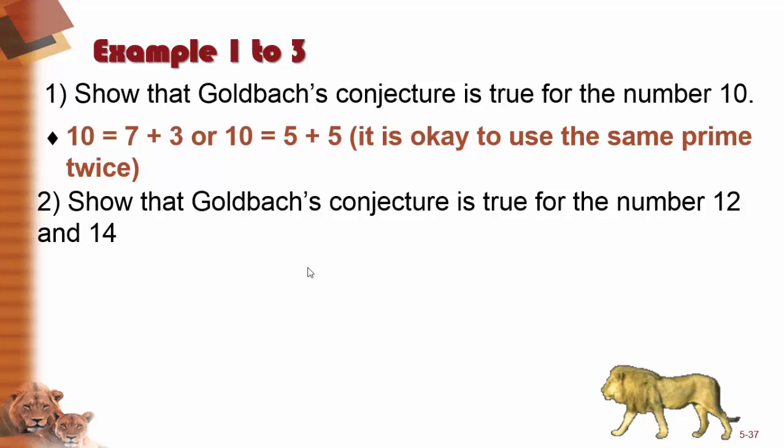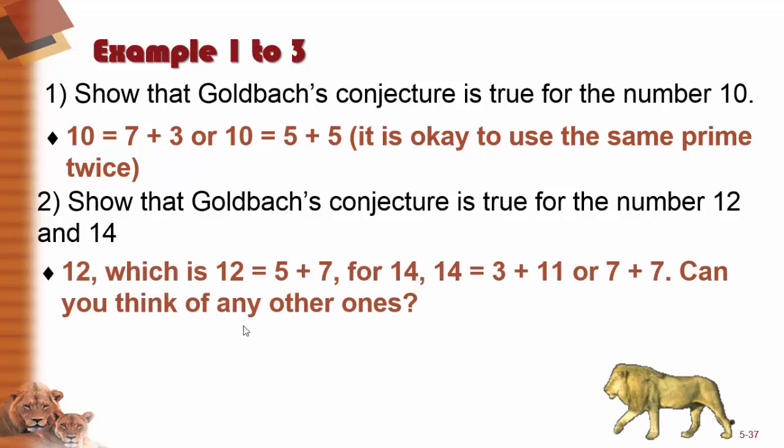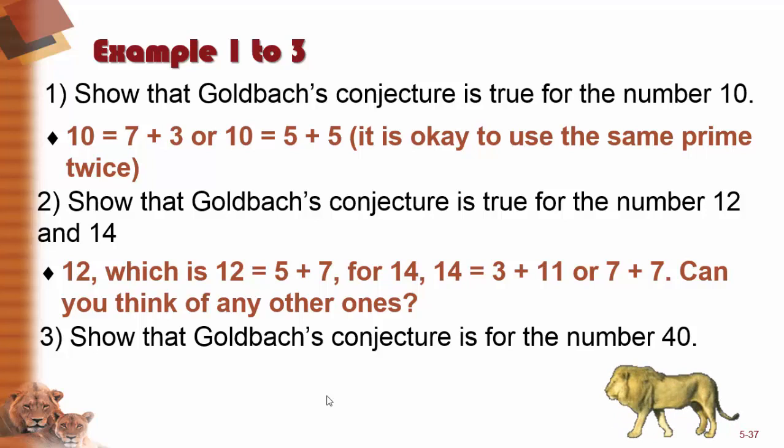In example number 2, we're asked to show that Goldbach's conjecture is true for number 12 and number 14. So for 12, we can say that it's equal to 5 plus 7 because 5 is a prime number and 7 is a prime number and we add those two together and we get 12. For 14, we can add 3 plus 11 and that gives us 14. Both 3 and 11 are prime numbers. Or we can add 7 plus 7 and that's equal to 14 and 7 is a prime number. We can do that twice because we're allowed to use prime numbers twice. Can you think of any other ones?